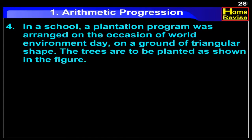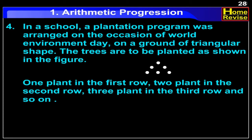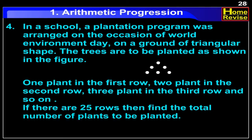In a school, a plantation program was arranged on the occasion of World Environment Day on a ground of triangular shape. The trees are to be planted with 1 plant in the 1st row, 2 plants in the 2nd row, 3 plants in the 3rd row, and so on. If there are 25 rows, find the total number of plants to be planted.